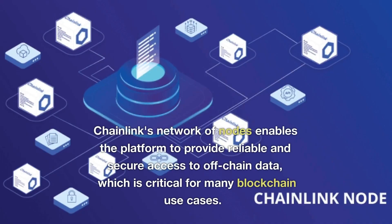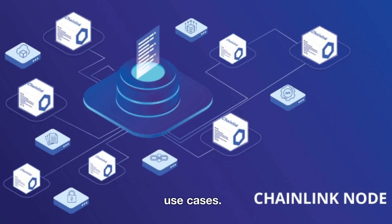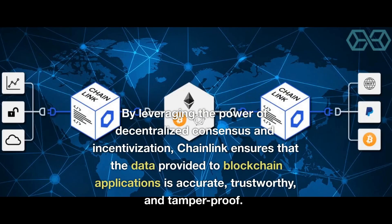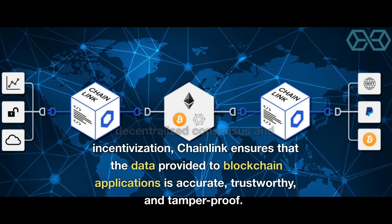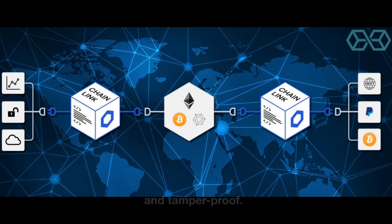Chainlink's network of nodes enables the platform to provide reliable and secure access to off-chain data, which is critical for many blockchain use cases. By leveraging the power of decentralized consensus and incentivization, Chainlink ensures that the data provided to blockchain applications is accurate, trustworthy, and tamper-proof.